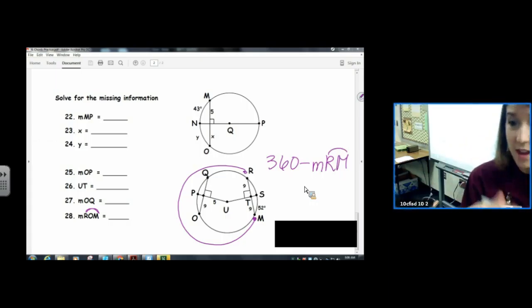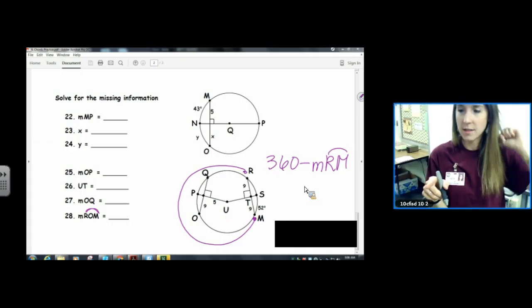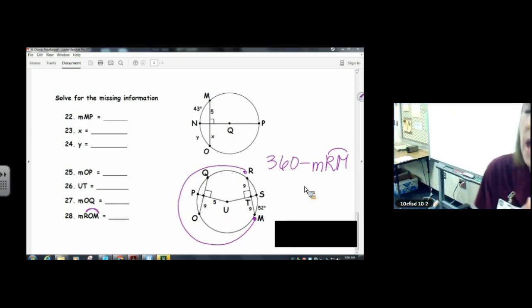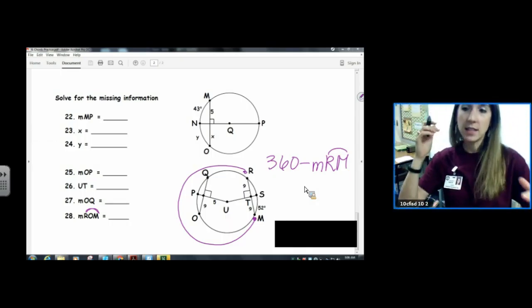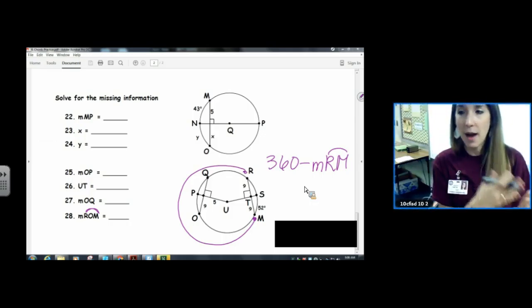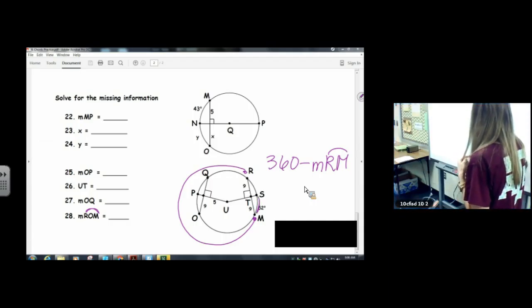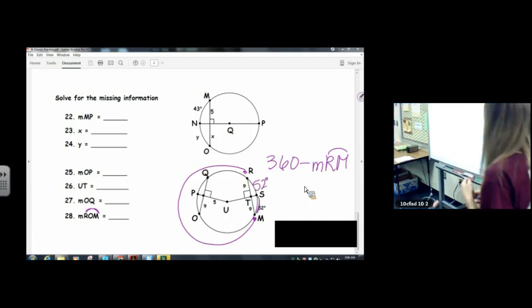So if you can see that major arc R-O-M is really the whole circle minus the minor arc R-M. And we know that when a radius is perpendicular to a chord, it bisects the chord and it bisects the arcs. So this is 52. This is 52. It's one of our theorems.